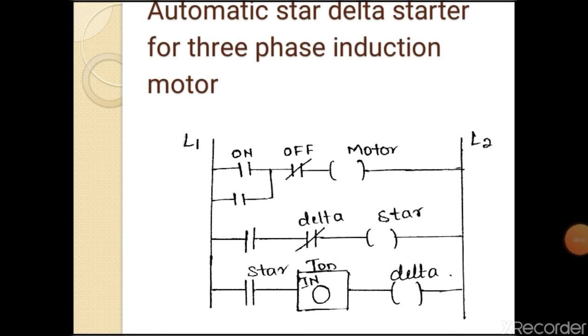Automatic star delta starter for three phase induction motor. In an automatic star delta starter delay is obtained by using a timer. The time delay can be adjusted by rotating the dial screw on the timer. The time setting is around 10 seconds for lightly loaded motors. For fully loaded motors the time setting is more than 10 seconds.